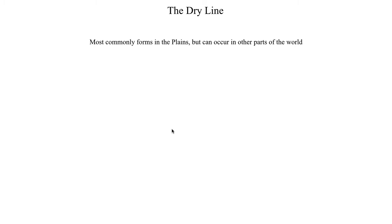Dry lines most commonly occur in the plains and are a fairly regular occurrence, especially in the springtime, but they can also occur in other parts of the world. The Himalayas can also create a boundary that resembles a dry line in parts of India, and the Andes mountain range in South America can also create similar boundaries. But by far the best cases of dry lines occur over the plains, due to the unique topography, the really tall Rocky Mountains to the west, and the Gulf of Mexico supplying a contrast by allowing warm moist air to be pulled northward ahead of the hot dry air.